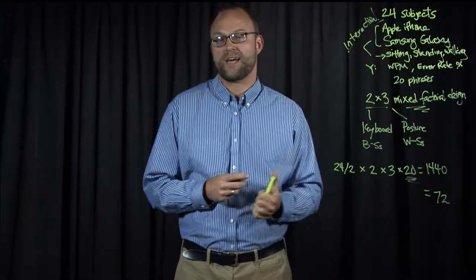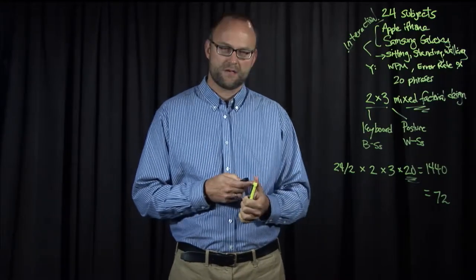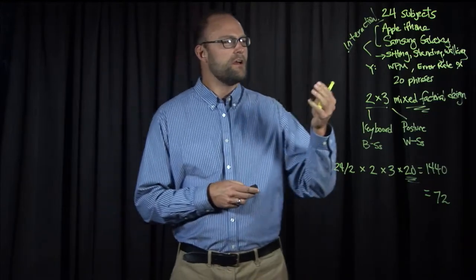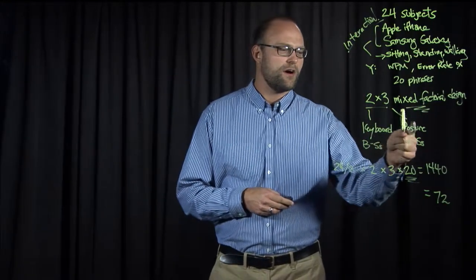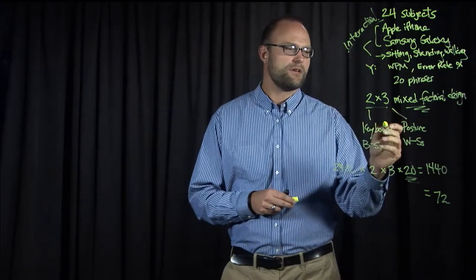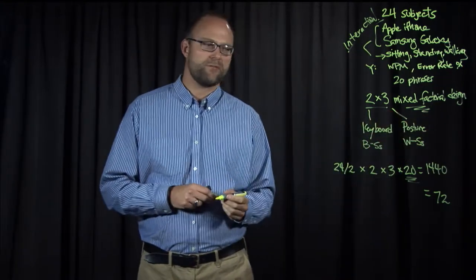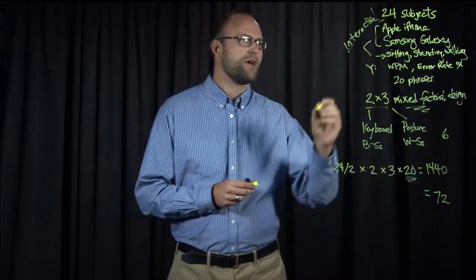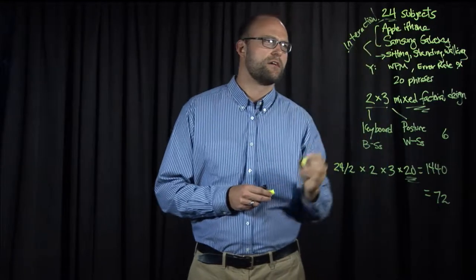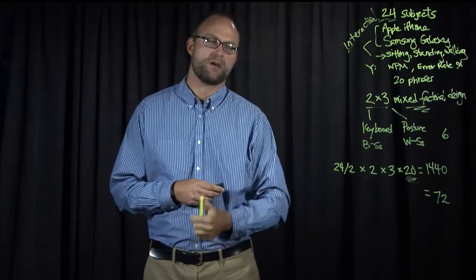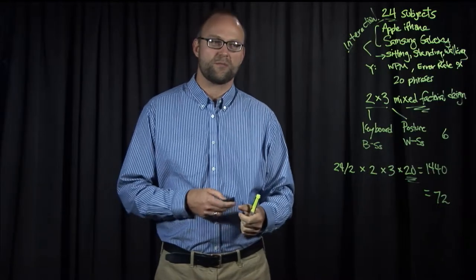We can think of that in a long format table as 72 separate rows in the table. We can fully counterbalance our posture effect. Because with three levels of posture, full counterbalancing would take six different sequences. We have 24 subjects. And so we see a nice, clean multiple of six there, where we can represent all of those sequences the same number of times.